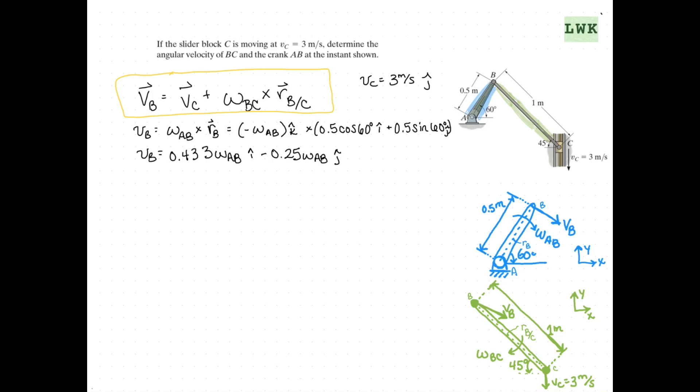Now we can plug this in for what we have above. We know Vb and Vc. So we can say Vb equals 0.433 omega AB I and what we know for our Vc, negative 3 J. Plus now we're going to do our cross product.